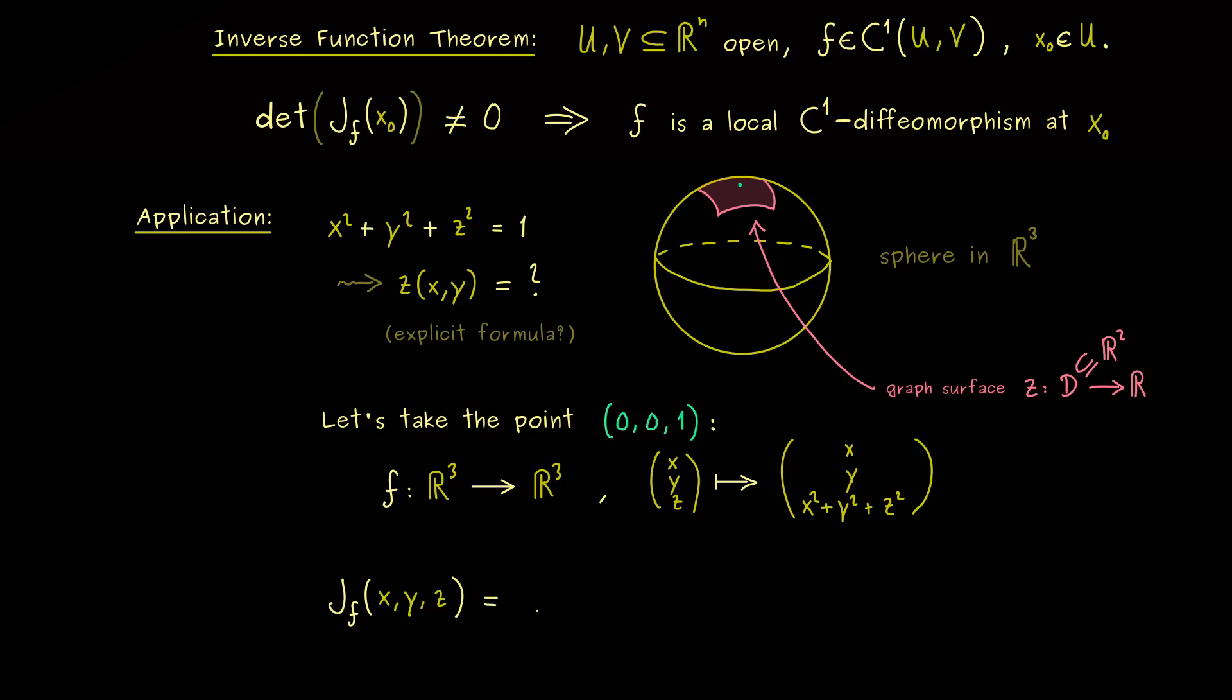This is not so hard, because the Jacobian is given by partial derivatives. So in the first column, we have the partial derivative with respect to x, which means we have 1, 0, 2x. And the second is with respect to y, which means we have 0, 1, 2y. And finally for the last column, we need to calculate the partial derivative with respect to z. And there we have it.